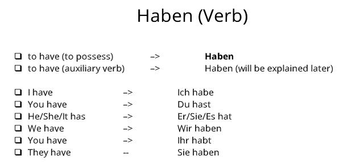For he, she, or it, the verb 'haben' is conjugated as 'hat.' For 'we,' 'you' (plural), and 'they,' the conjugation is 'haben' — for example, 'wir haben,' meaning 'we have.'